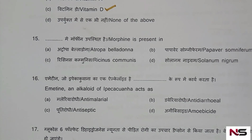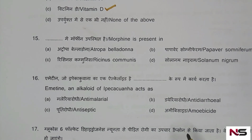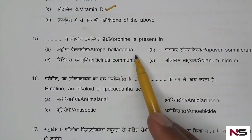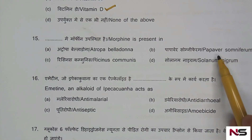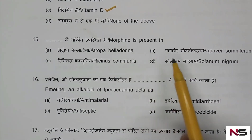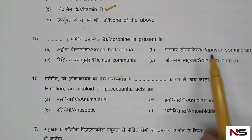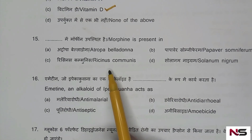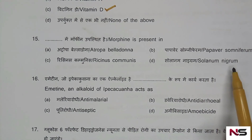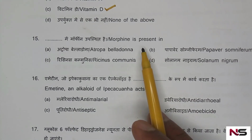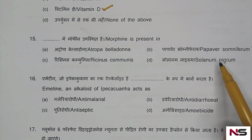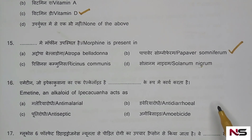Question 15: Morphine is present in — what is the source of morphine? Options: A) Atropa belladonna, B) Papaver somniferum, C) Ricinus communis, D) Solanum nigrum. We know that atropine comes from Atropa belladonna, and castor oil comes from Ricinus communis. Morphine is obtained from Papaver somniferum. Option B is the correct answer.